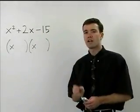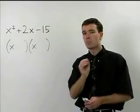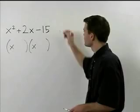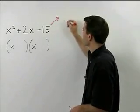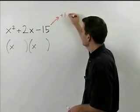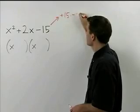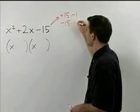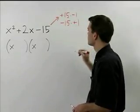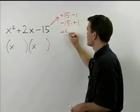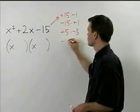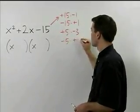A negative number factors into the product of a positive and negative. So this negative 15 can be thought of as positive 15 times negative 1 or negative 15 times positive 1, positive 5 times negative 3, or negative 5 times positive 3.